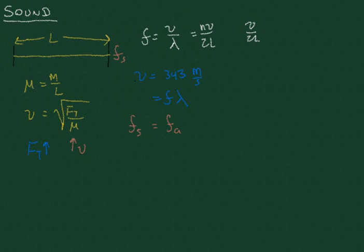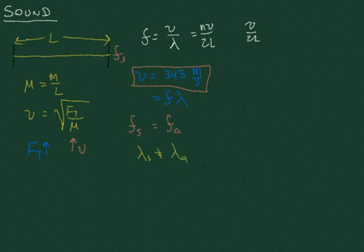But because the velocity, the speed that a sound wave propagates in air is different, this tells us that the wavelength is going to be different in air than it is on the string. So the frequency is the same, but the wavelength is different. And so it's this propagation of sound in air, which is what we actually hear in our ears.